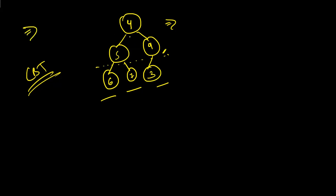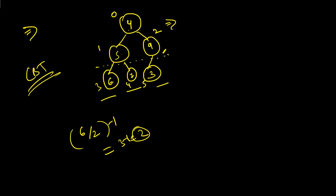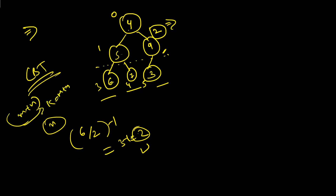How do we find the position of the last non-leaf node? We have 6 elements. 6 divided by 2 minus 1 = 2. So the last non-leaf node is at position 2, which matches. In our actual question, after merging, we have k = m + n total elements. So k/2 - 1 gives us the last non-leaf node position, and we start our loop from there going down to index 0.